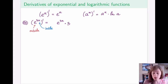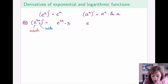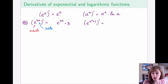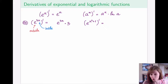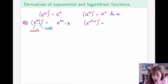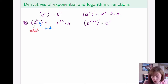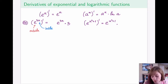Followed by the derivative of the inside: the inside here is 3x, and the derivative of 3x is simply 3. For another example, the derivative of e to the power x squared plus 1 works the same way. The outside function is e, its derivative is itself — so we get e to the power (x² + 1) — followed by the derivative of the inside, which is 2x.